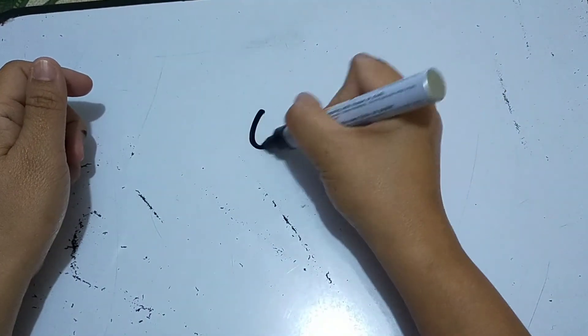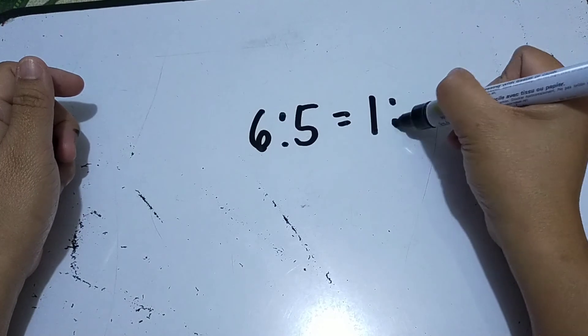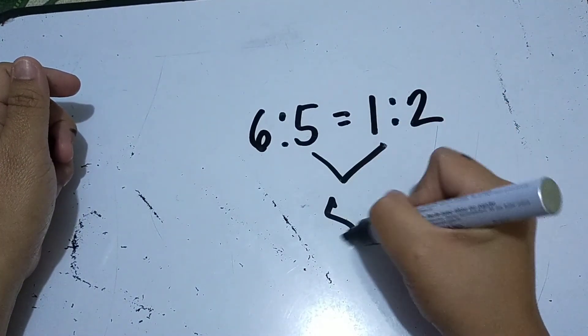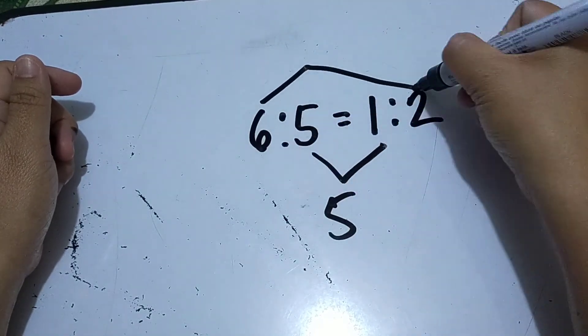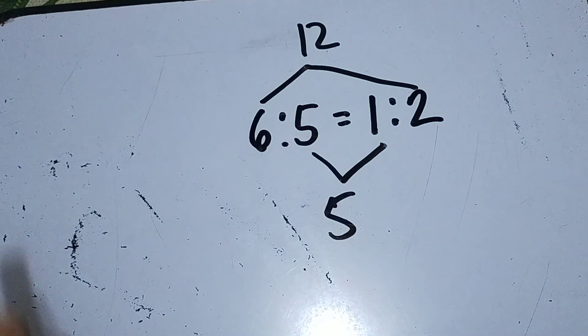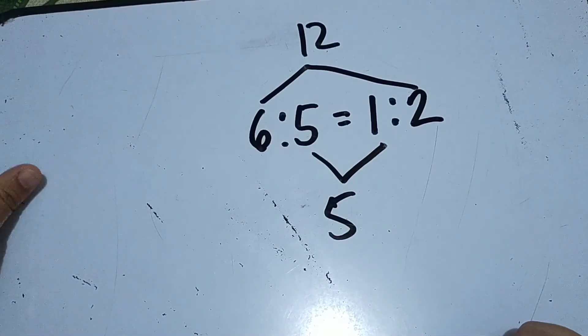Another. 6 is to 5 is equal to 1 is to 2. Same process. 5 times 1 is 5, 6 times 2 is 12. So therefore, this is not an equivalent ratio. So, that's all for now. Thank you for watching.